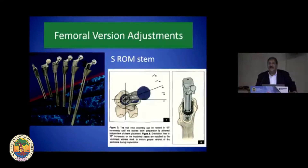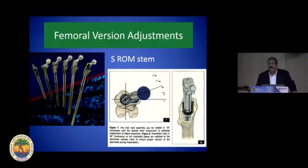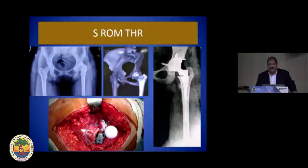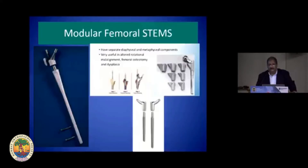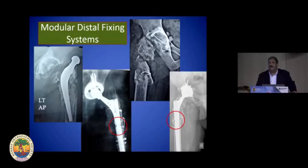In cases where proximal landmarks are missing, anteversion is referenced to the distal femoral condyles. We have stems available which allow version adjustments — notably the S-ROM system, which allows increasing or decreasing version relative to the metaphysial sleeve. This is useful in all metaphysio-diaphysial mismatch scenarios, as in a young lady with 57 degrees of proximal femoral anteversion where we used the S-ROM system, retroverted the proximal femoral stem within the sleeve, and achieved an ideal picture. Newer modular femoral stems are also popular and give similar options depending on bony morphology.